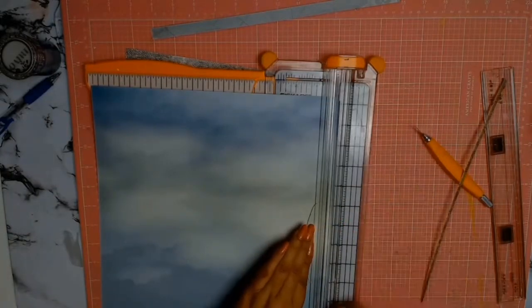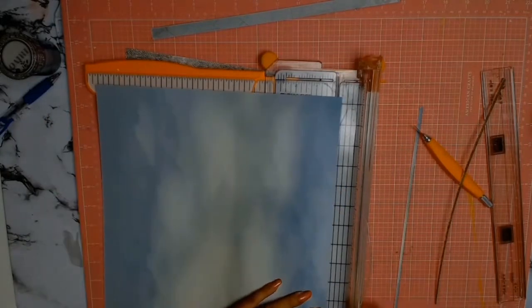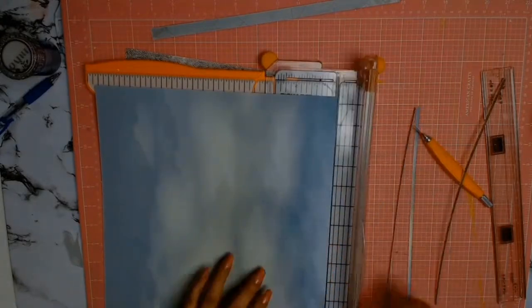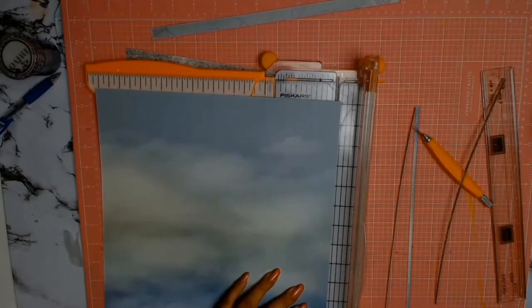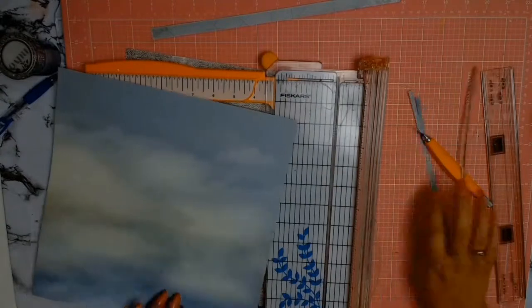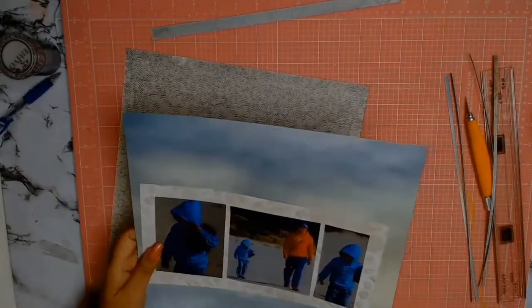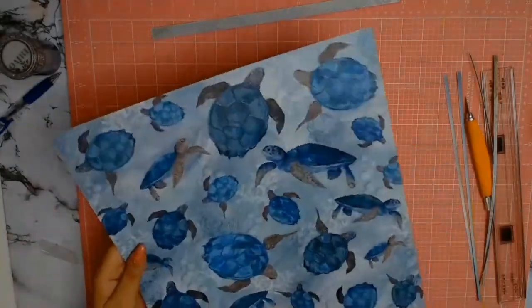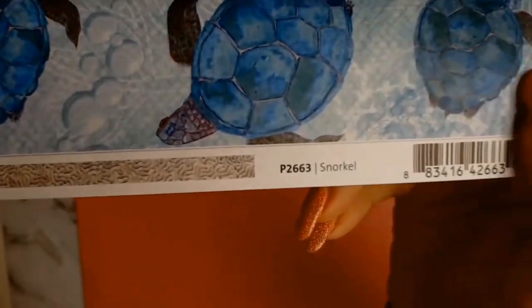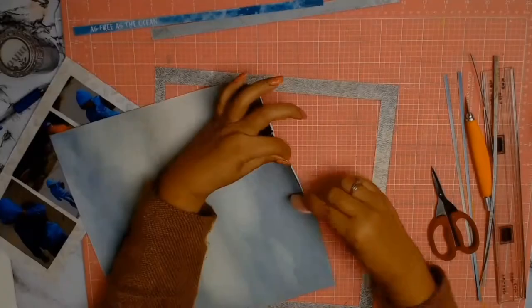The actual paper is from Couture Creations, from their Sea Breeze collection, and I believe the paper is called Adventurous. I knew that I was going to mat this paper, so that's why I'm trimming all four sides. I believe I trimmed about two millimeters on all four sides because when I mat it, it's only going to be a very small mat. The paper that I chose to use as a mat is from Kaisercraft, from the Deep Sea collection, and the paper is called Snorkel.